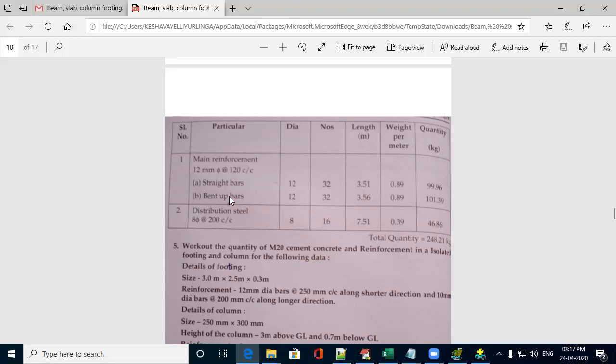two types of bars, one is straight bar and bent up bar. Both are of 12mm and both are of 32 numbers. And length of them is, length of straight bar is 3.51 and length of cranked bar is 3.56.